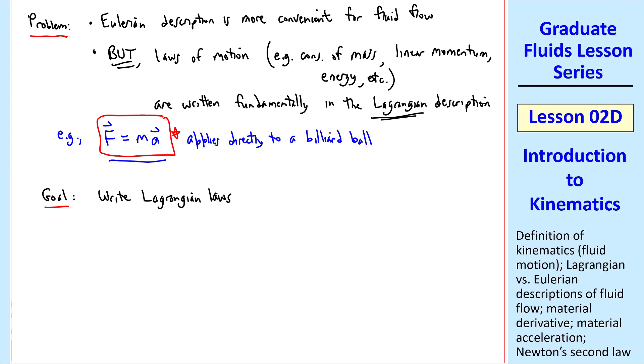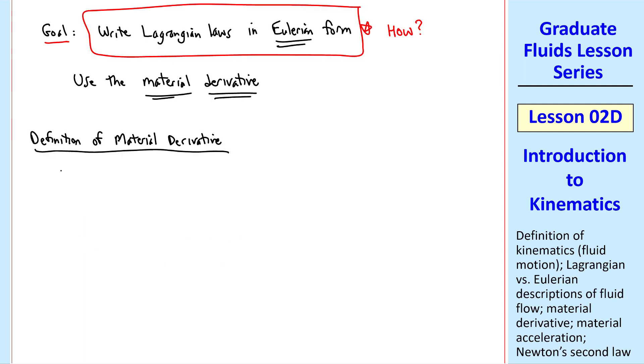our goal is to write Lagrangian laws, like Newton's second law, in Eulerian form, since Eulerian is more convenient, as we've said. How do we achieve this goal? The answer is that we use the material derivative. First let's define it.